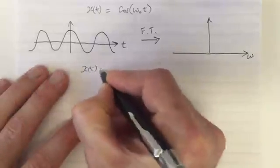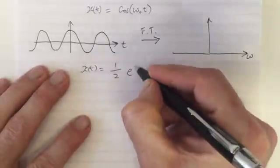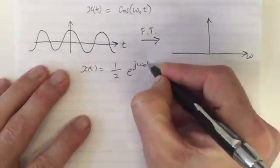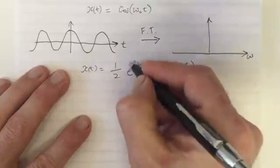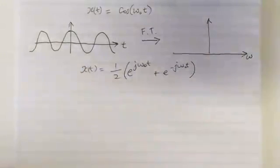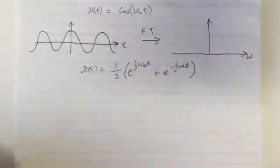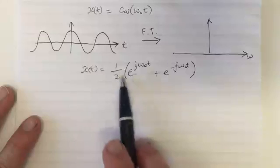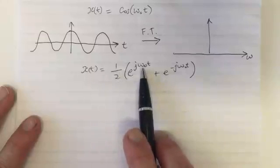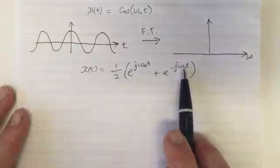We can write x(t) as 1/2 times (e^(jω₀t) + e^(-jω₀t)). We know this is a way to write cos(ω₀t) from the definition involving complex exponentials. When we look at this, we can see there is half a component with positive frequency ω₀t and half a component with negative frequency -ω₀t.